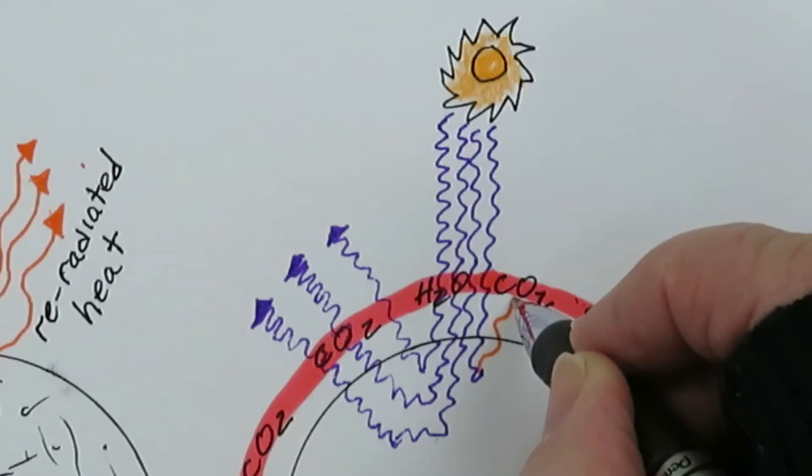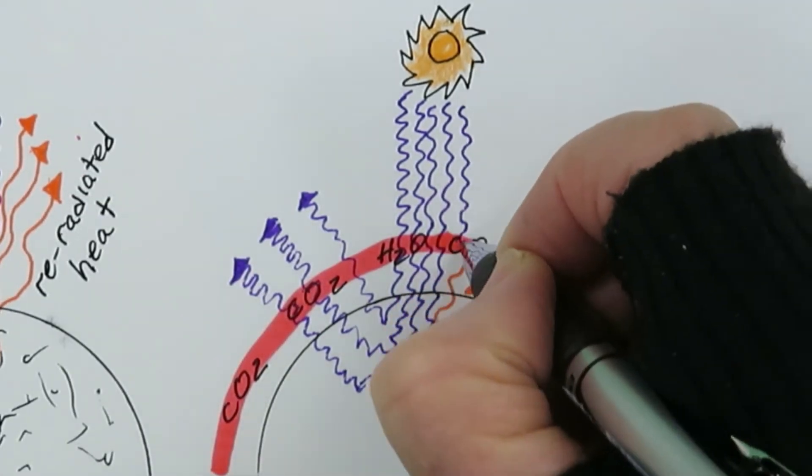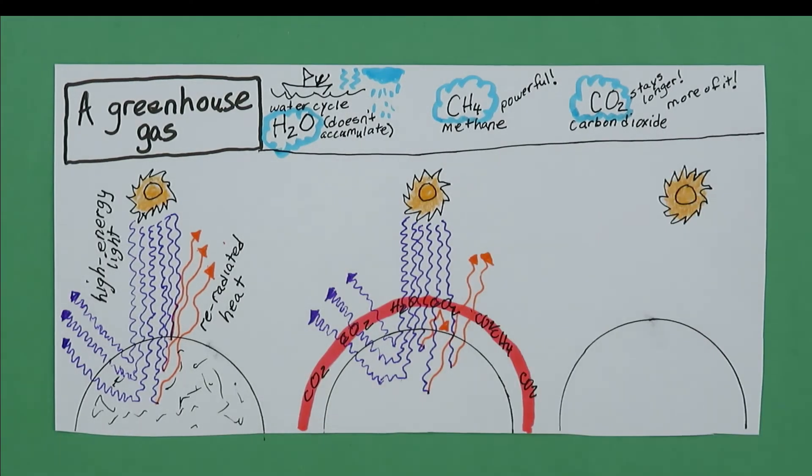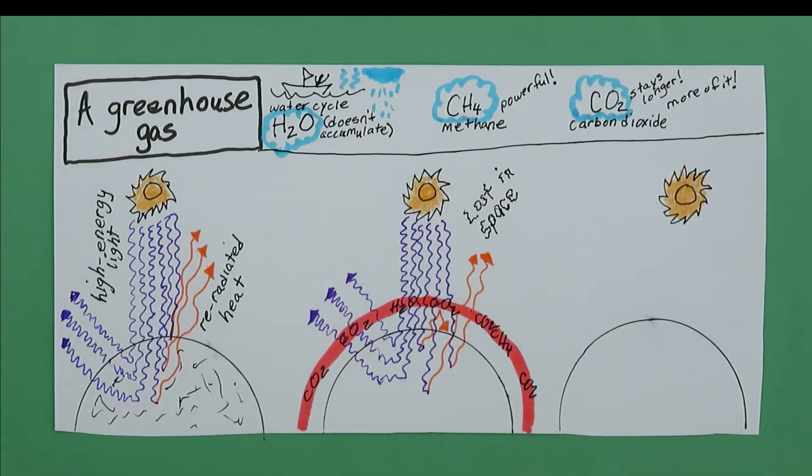If heat hits a greenhouse gas molecule, it gets bounced around. It sticks around longer, so less heat gets lost in space. The Earth warms up.